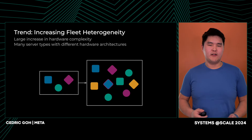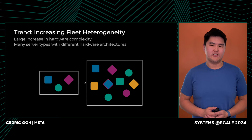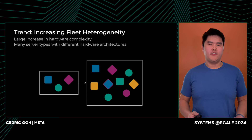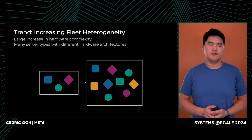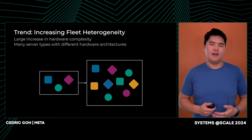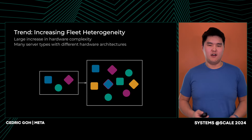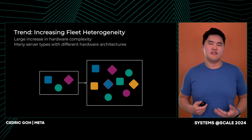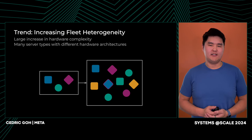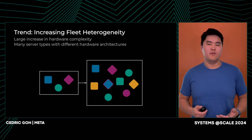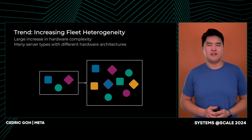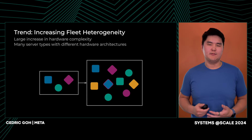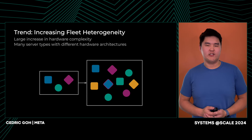The second trend we've observed is a large increase in the fleet heterogeneity that we manage. Over the years, we've seen a large increase in the number of distinct hardware types used at Meta, and in addition to specialized hardware such as GPUs, we found it increasingly difficult to abstract such capacity details for more opinionated users, which has led to a lot more customization being required on Twine jobs.